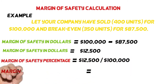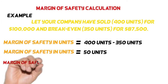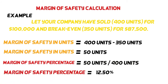Now we calculate margin of safety percentage. Dividing $12,500 by $100,000 equals 12.50 percent. If we use units, dividing 50 units by 400 units also equals 12.50 percent. Note that the final margin of safety percentage remains the same using both methods.